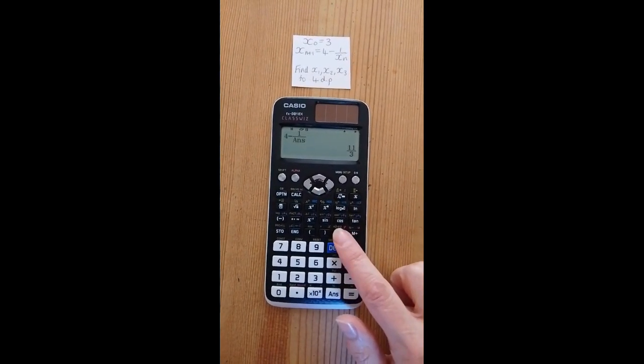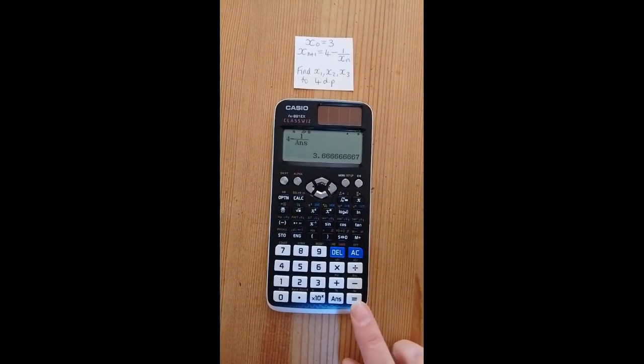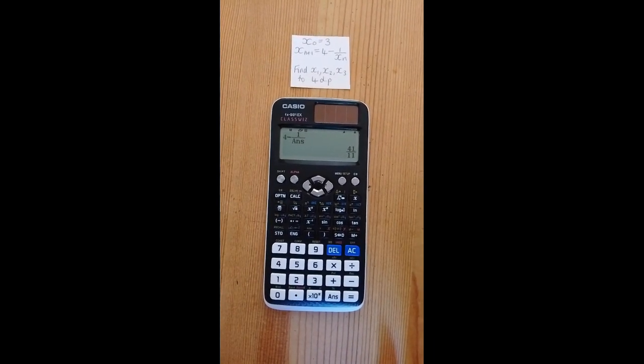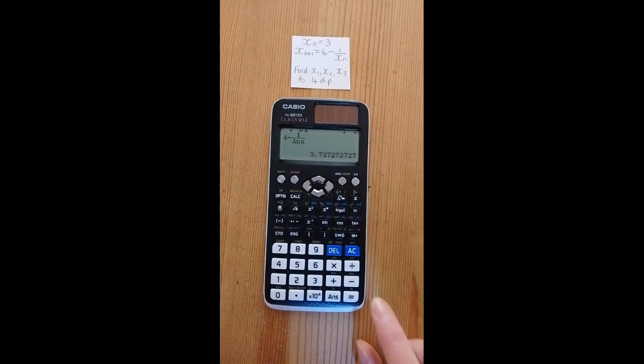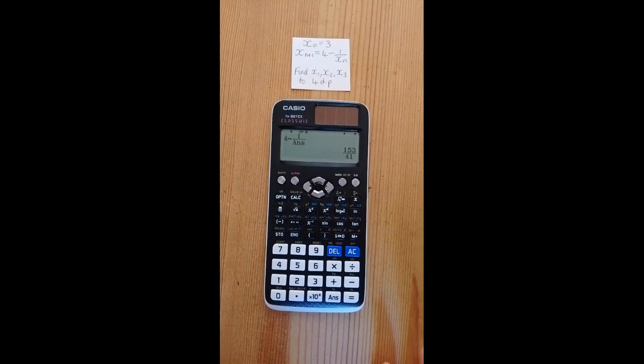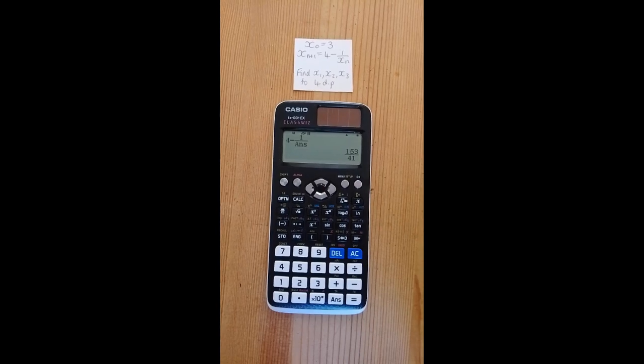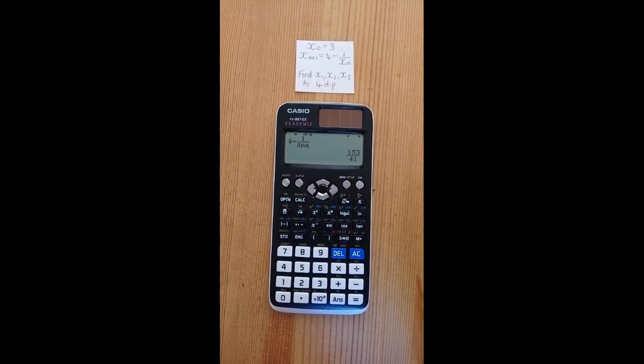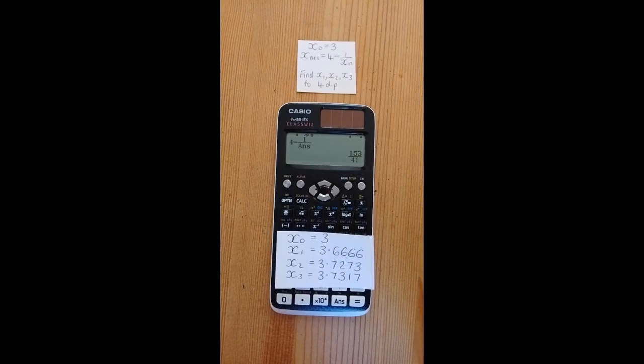You can see this is a decimal. Then press equals again to get x2. Then press equals again to get x3. We can write down each answer as we go along. And that's it.